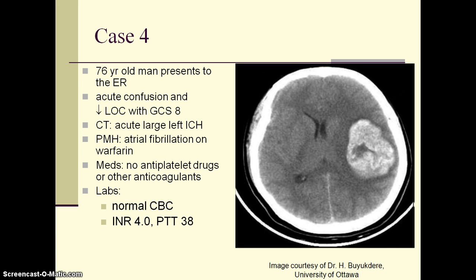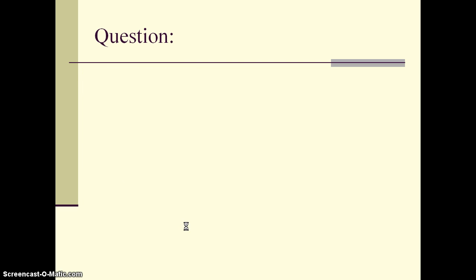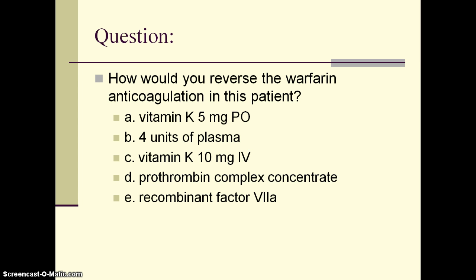Case 4: a 76-year-old man presents to the emergency department with acute confusion and a decrease in level of consciousness, GCS of 8. CT scanning shows an acute large left-sided intracranial hemorrhage. Past medical history is significant for atrial fibrillation on warfarin, with no other anticoagulants or antiplatelet drugs. Labs showed a normal CBC, INR of 4.0 (elevated), and normal PTT of 38. Question: how would you reverse the warfarin anticoagulation — vitamin K orally, 4 units of plasma, vitamin K 10 mg IV, prothrombin complex concentrate, or recombinant factor 7a?